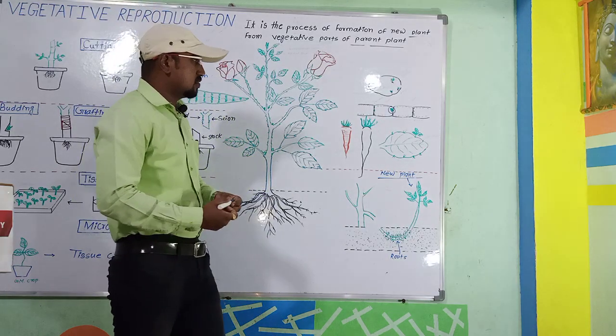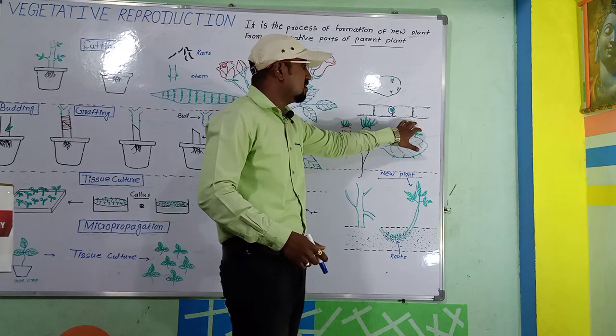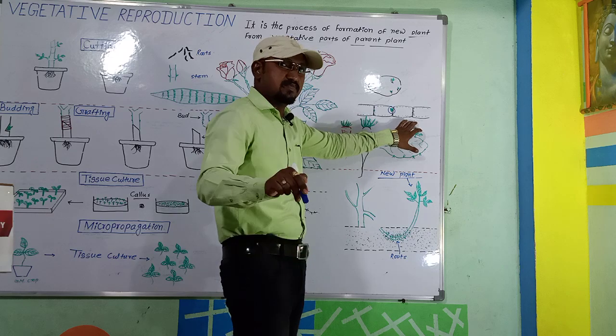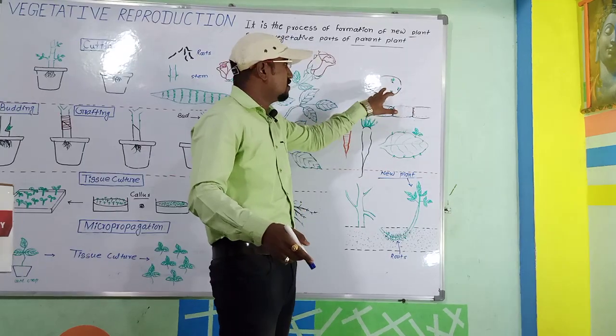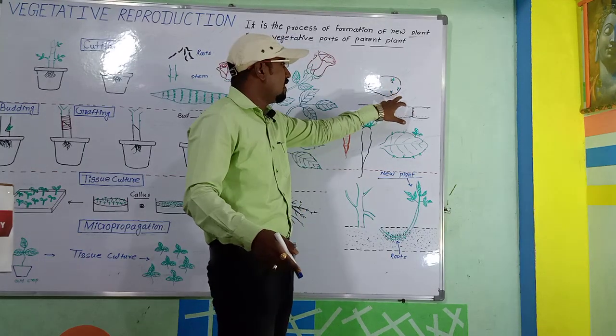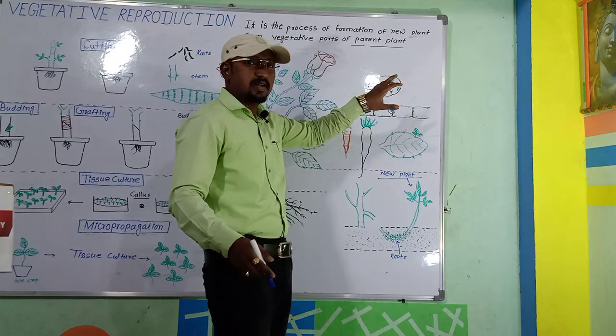Examples of vegetative propagation through stems include sugar cane and potato. These plants can reproduce through their stem parts.